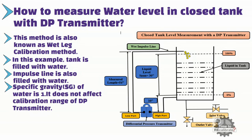However, if the impulse line or tank is filled with another fluid, then we need to multiply the specific gravity of the process fluid with the height of the liquid to calculate the calibration range. As you can see from the picture, zero percent is the minimum level of liquid in the tank, and 100% is the maximum level. Transmitter position does affect level measurement in the wet leg calibration method. So if your transmitter is installed below the zero percent baseline, you need to measure the distance between the transmitter and the zero percent baseline.